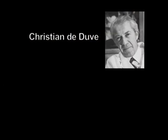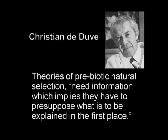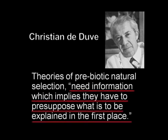Nobel prize-winning molecular biologist Christian de Duve, who has done a lot of work on the origin of life problem, very succinctly summarized the problem with this whole class of theorizing. He says theories of prebiotic natural selection fail because they 'need information, which implies they have to presuppose what is to be explained in the first place.' All right, so it's not by chance, it's not by natural selection. But there's a very popular theory going around about RNA. What is the RNA hypothesis and what's wrong with it?